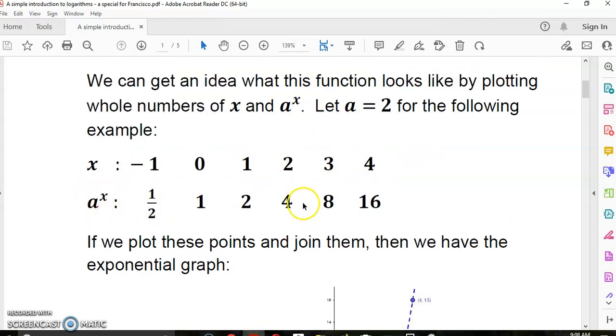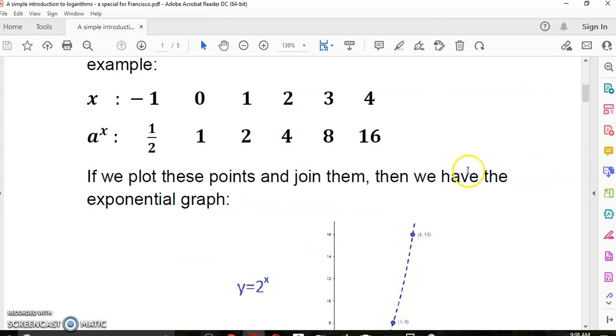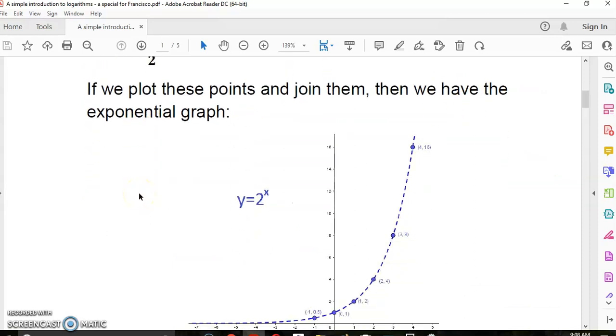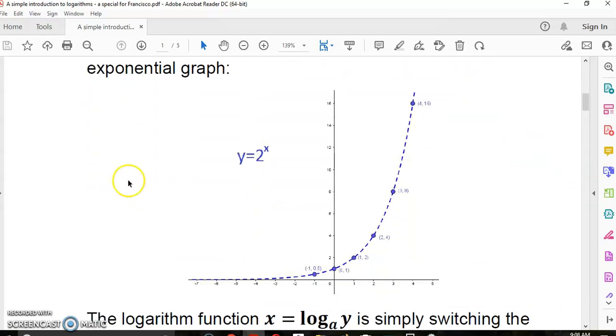We find out that if we put 2 to the minus 1, it's a half, 2 to the 0 is 1, 2 to the 1 is 2, and so on. If we plot these points and join them, then we have the exponential graph, which you see here.